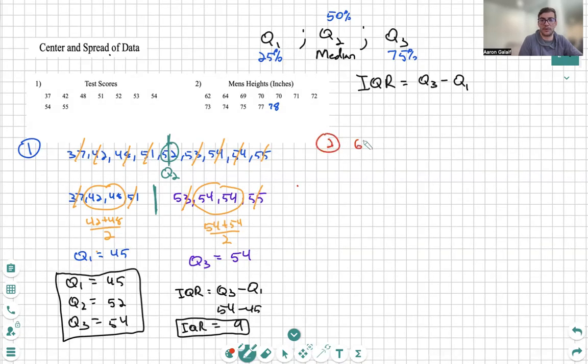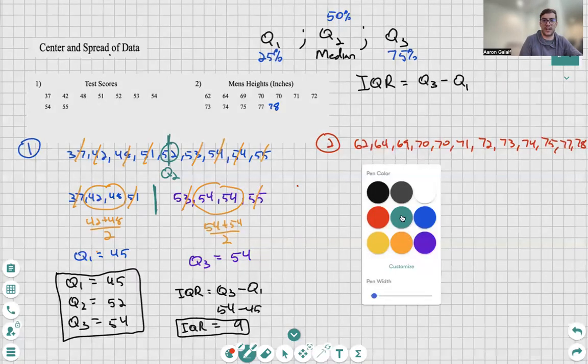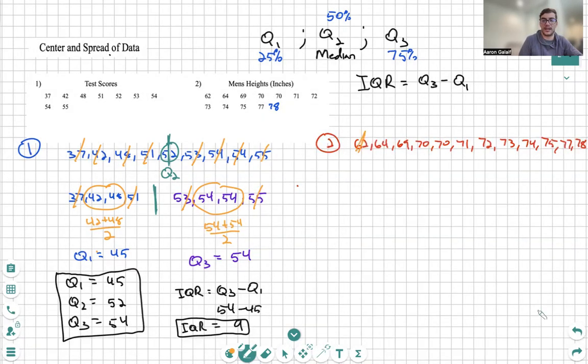Number two. First thing we need to do is rewrite everything from least to greatest. This will make our lives significantly easier. Perfect. Let us find our median, cancel them out.